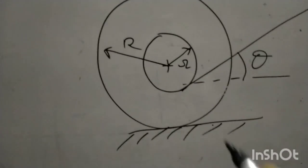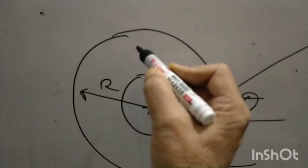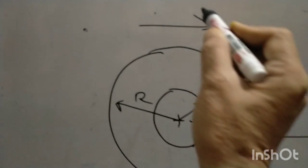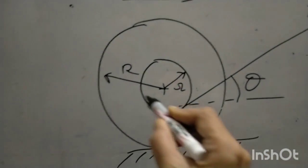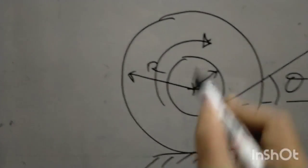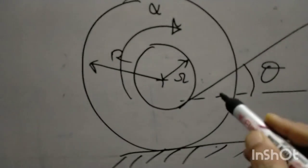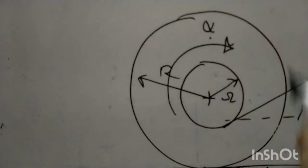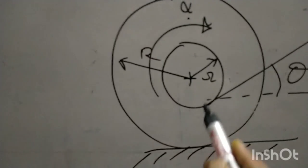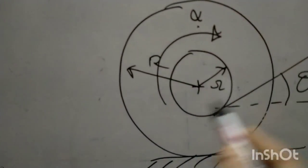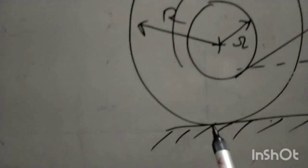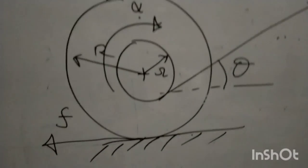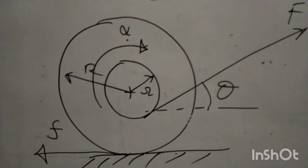Now let me show you the calculation. Take a general case and assume the spool is moving in the forward direction with pure rolling, with acceleration a. Naturally the angular acceleration must be in the clockwise direction. The torque applied by the applied force alone cannot give this clockwise angular acceleration, so there has to be a friction force acting in this direction to provide the rotational motion with alpha clockwise.